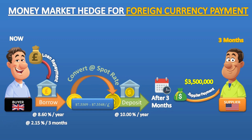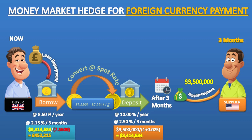The interest rates for three months are 2.15% to borrow in pounds and 2.50% to deposit in dollars. The company needs to deposit enough dollars now so that the total including interest will be $3,500,000 in three months' time. The dollars deposited will cost £452,215. The company must borrow this amount, and with three months' interest at 2.15%, will have to repay £461,938. Thus in three months, the American supplier will be paid out of the American bank account, and the buyer will effectively be paying £461,938 to satisfy this debt.